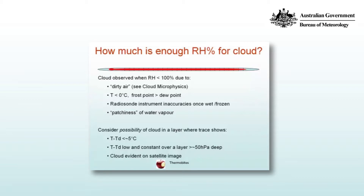What we do then is consider the possibility of cloud in a layer where the trace shows a dewpoint depression of less than about 5 degrees Celsius. You particularly want the dewpoint depression to be low and constant over a large layer — about 50 hectopascals or greater. And of course, you never do any of this without consulting a satellite image as well, so you're trying to build a consistent picture from multiple sources of information.